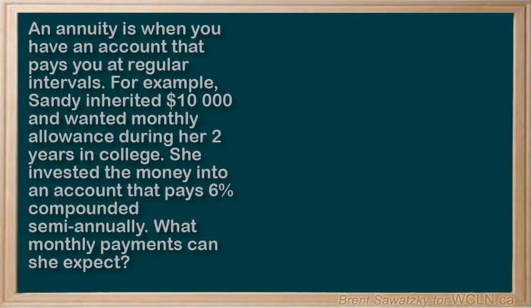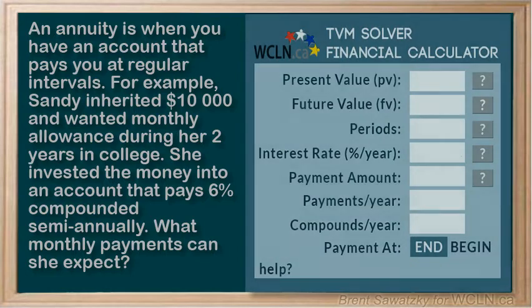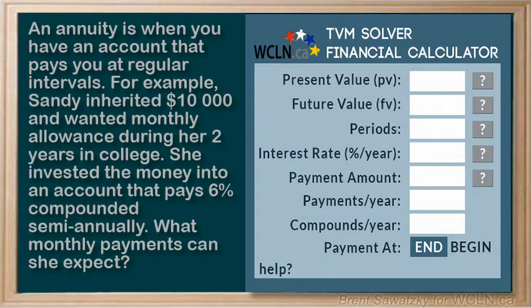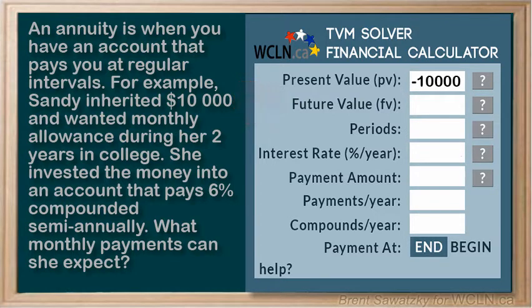In this case, the bank is paying Sandy out $10,000. Let's pull out our TVM solver. Our present value — this is money that came out of Sandy's pocket and went to the bank — so let's put that in as negative $10,000. We expect that we're paying out this total amount over this time, so future value should be zero.